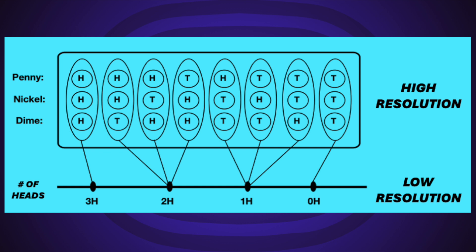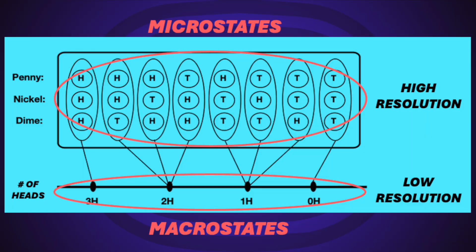All the sequences and combinations you can get from flipping those coins — in this case there are eight different combinations. In Daniel's example, he uses the information about the number of heads one gets during a sequence of coin flips as macrostates, and a specific sequence as a microstate. We can understand how the number of heads is low-resolution data and how a specific sequence is high-resolution data, due to the relationship of a many-to-one mapping.